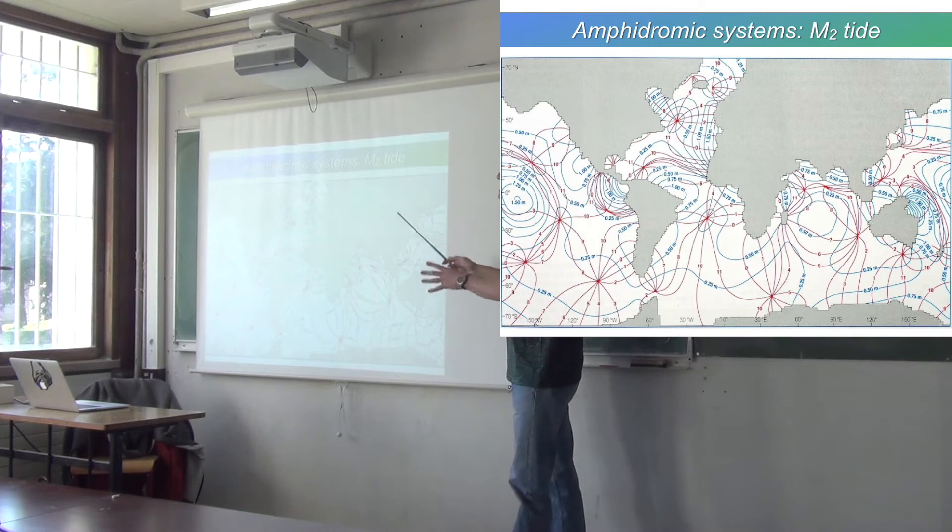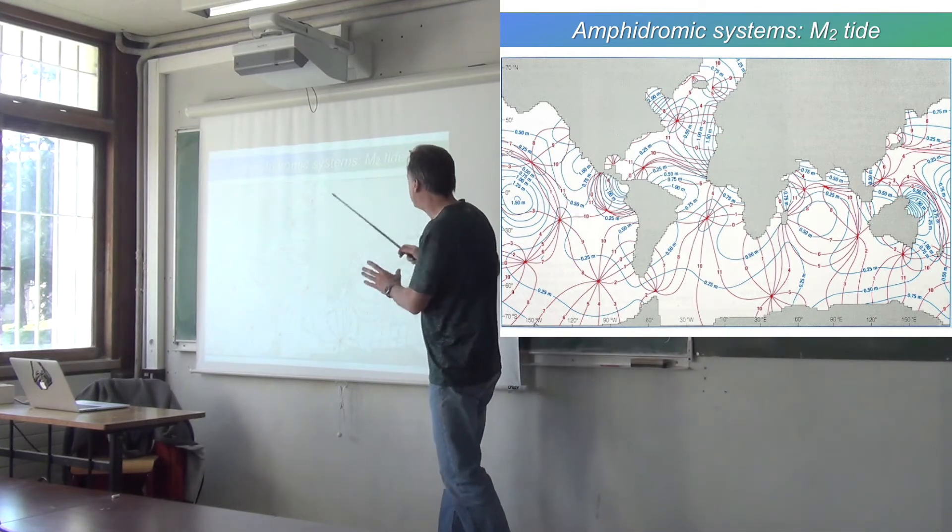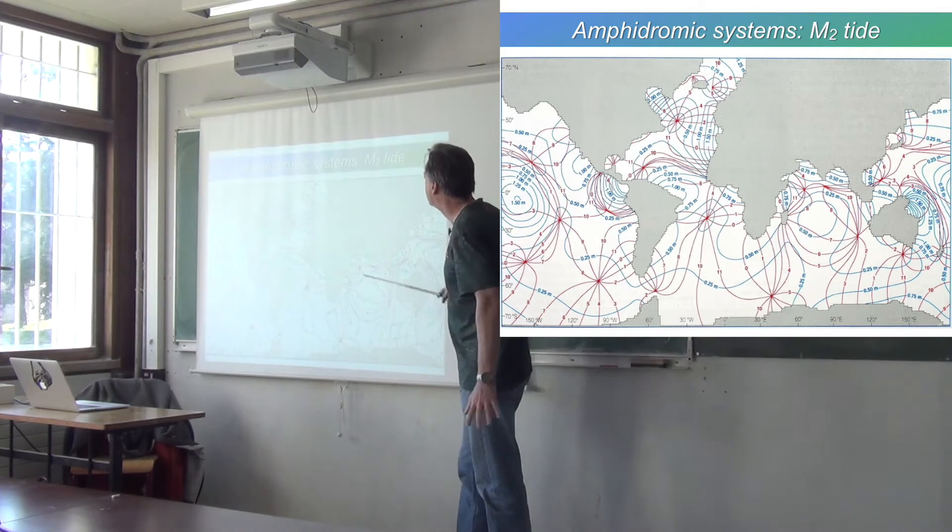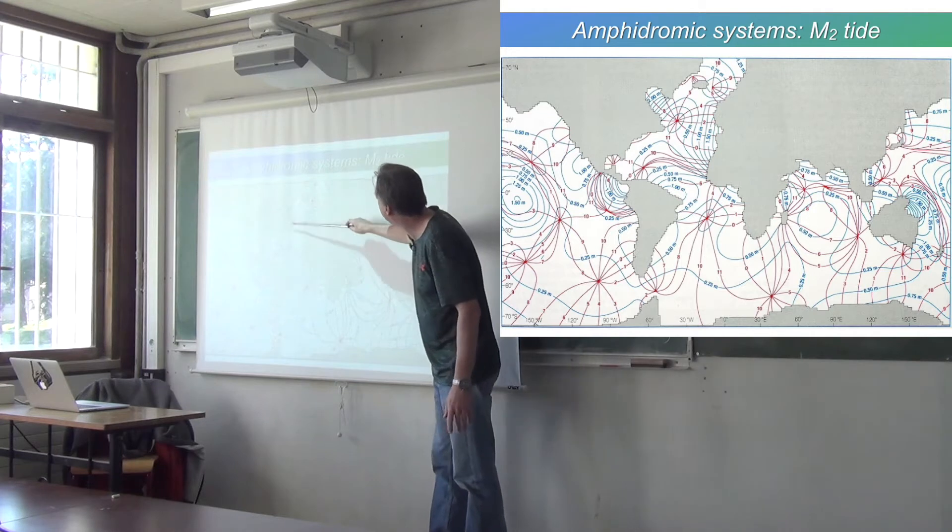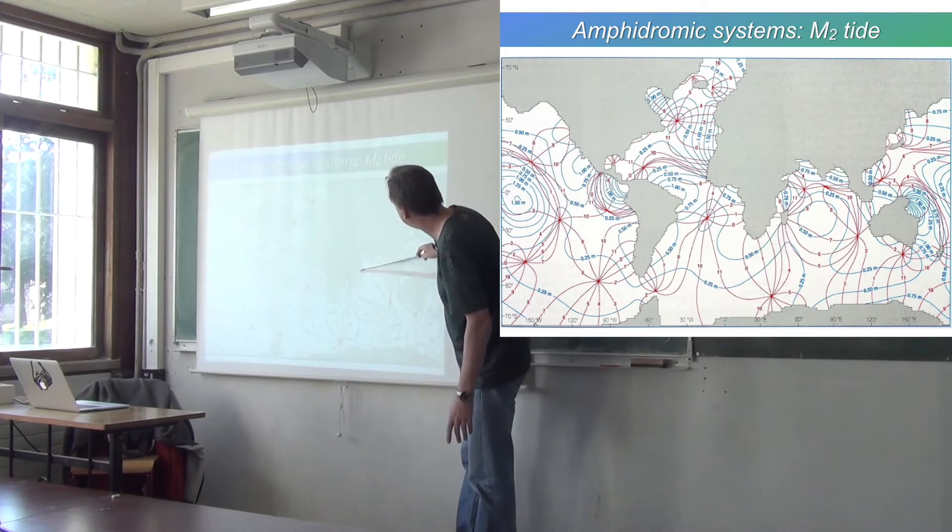You have to draw a different map for every component of the tide. So you look at the variations at this exact frequency, and this is the pattern that you get. So maximum amplitudes are near the coasts.